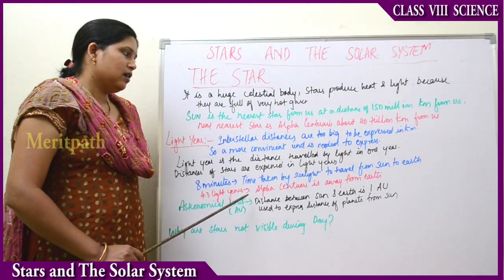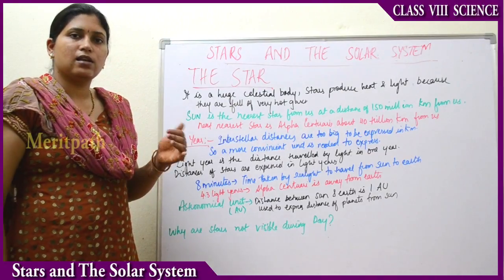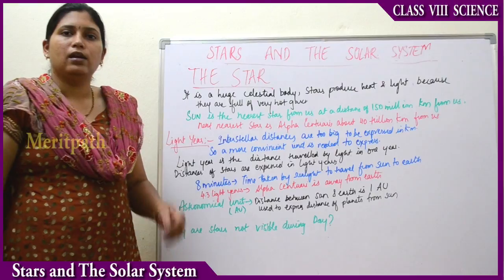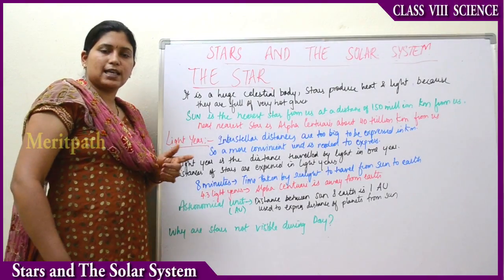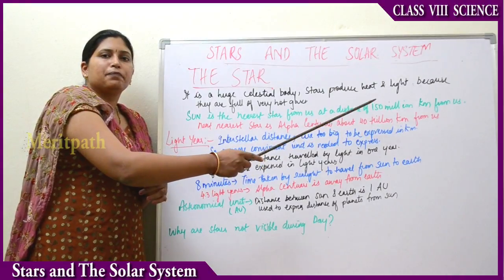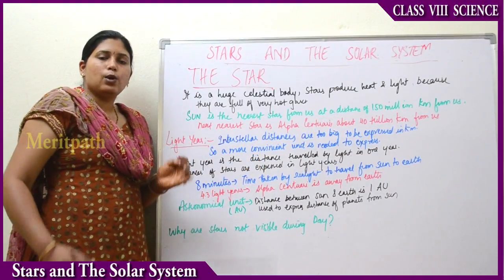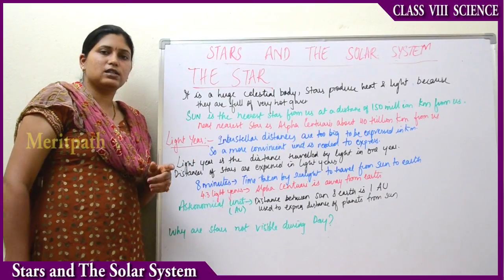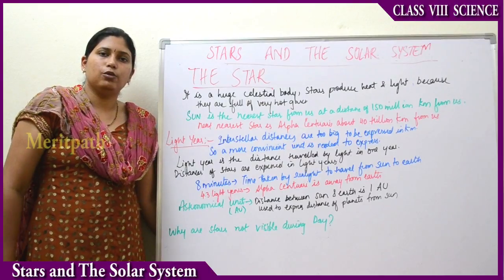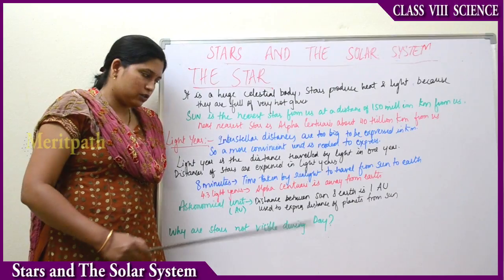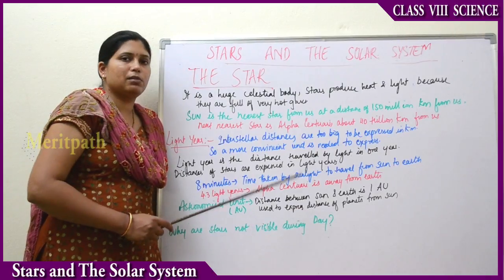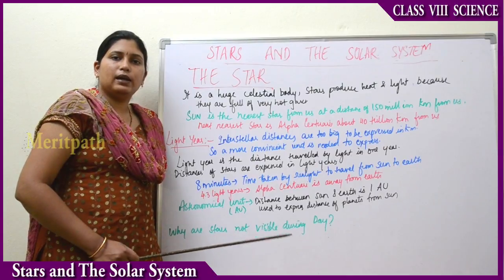Alpha Centauri is 4.3 light years away from Earth. When expressed in kilometres it is 40 trillion km, but in light years it is 4.3 light years. There is also another unit called the Astronomical Unit, abbreviated as AU. This unit is used to express the distance of planets from the sun. The distance between the Earth and the sun is defined as one Astronomical Unit.